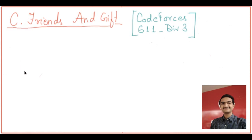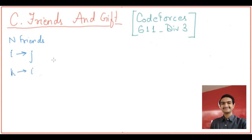In this question, we are given that there are n friends and each of them can gift to each other such that each friend i will give one gift to j, and he can give only one gift. He should also receive one gift from k, where k sent one gift to i, i is not equal to j, and k is not equal to i.